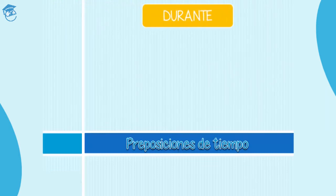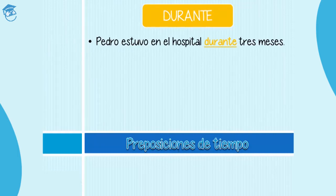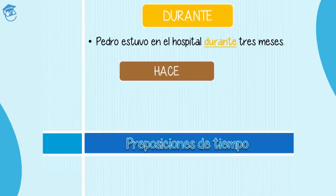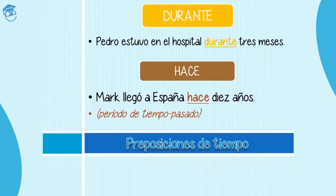Durante is another preposition of time — during. Pedro estuvo en el hospital durante tres meses. You use durante to talk about a determined period of time — Pedro was in the hospital for three months. Para indicar tiempo, también puedes usar la preposición hace — to indicate time you may also use hace. For example, Mark llegó a España hace diez años — to talk about a period of time that has passed and is very concrete. Mark arrived to Spain ten years ago.